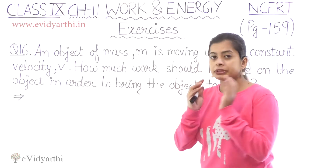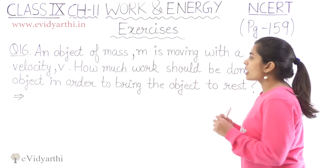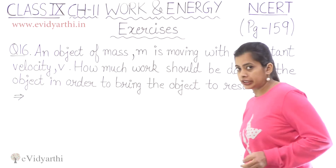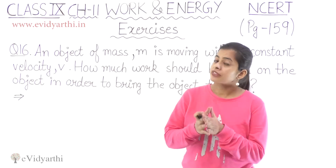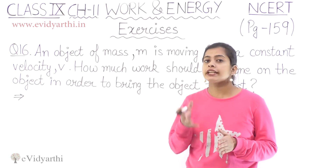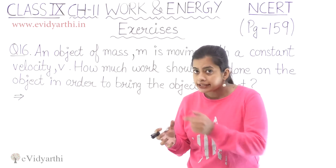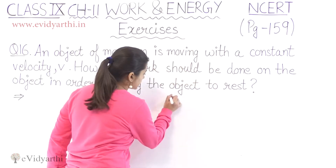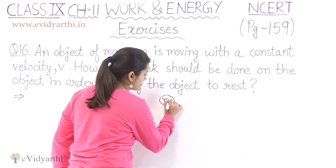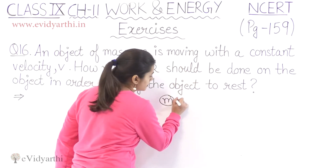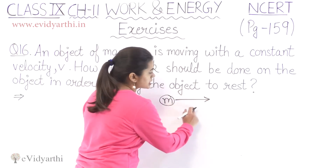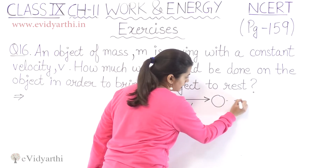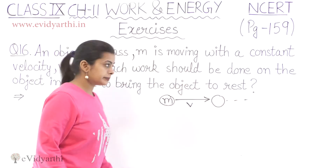What do we see here? An object of mass M is moving at a constant velocity V. Here is an object of mass M and that object is moving constantly. This object is constantly moving with a velocity V. So in this way our object is moving.